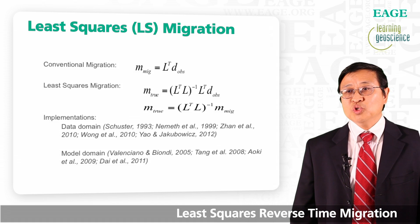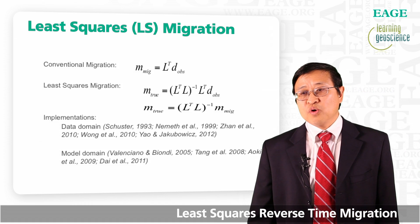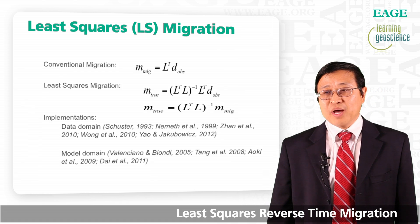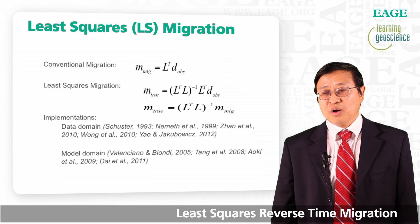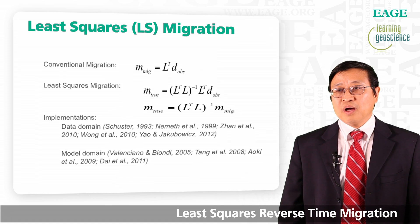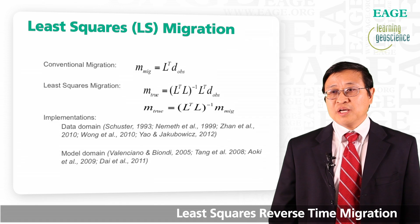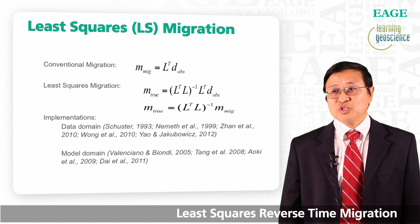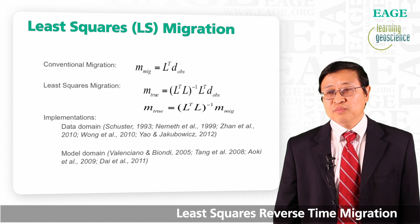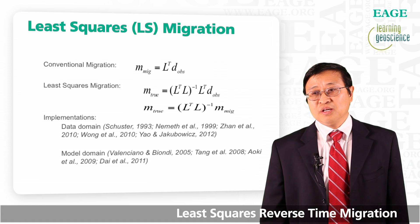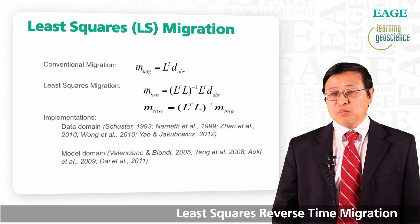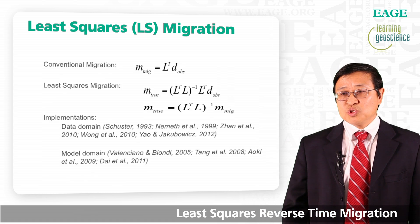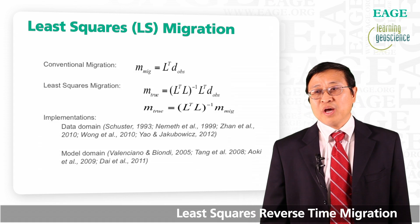Let's compare least squares migration with conventional migration. For conventional migration, the migration operator is an adjoint operator — it is not inverse. Therefore, there may be migration artifacts due to acquisition footprint or non-uniform illumination, and it may also have amplitude errors. For least squares RTM, you have this additional term which is the inverse of the Hessian matrix, making it an inversion-based imaging algorithm. The inverse Hessian is able to remove or reduce migration artifacts due to acquisition footprint or non-uniform illumination, corrects migration amplitude errors, and also serves as a deblurring filter, making regular migration higher resolution.